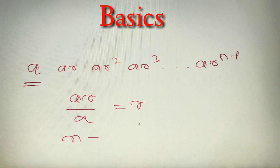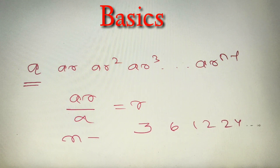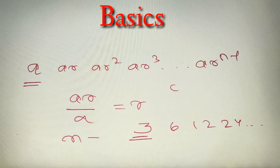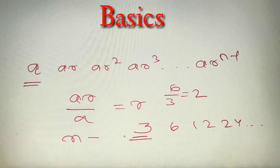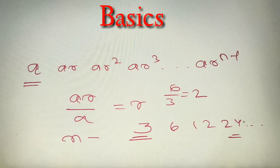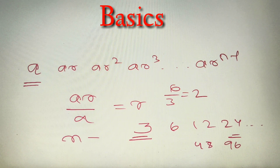Let's take an example. If the GP is 3, 6, 12, 24, and so on, then the first term is 3 and the common ratio is 6 divided by 3, which equals 2. We can verify: 3×2=6, 6×2=12, and 12×2=24. The next term after 24 will be 48, then 96, and it continues up to the number of terms given.